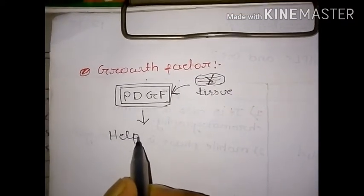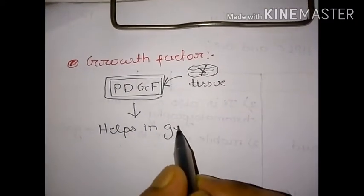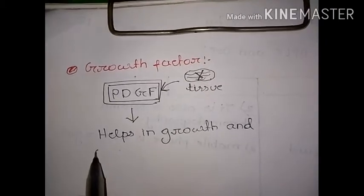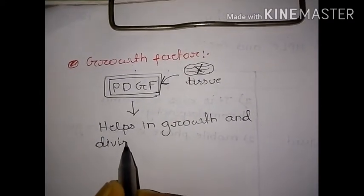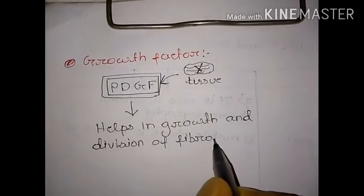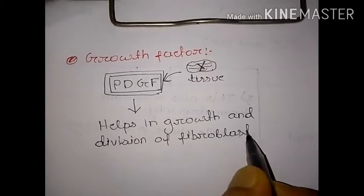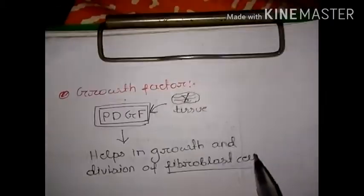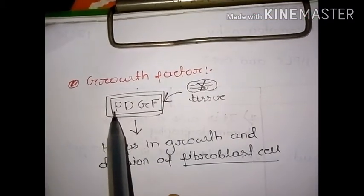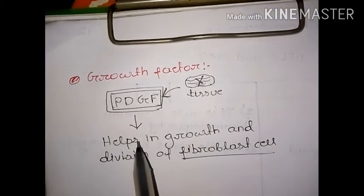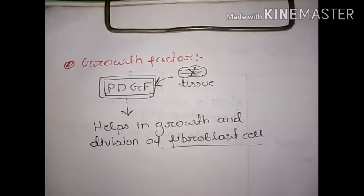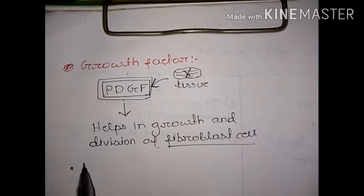PDGF helps in the growth and division of fibroblast cells. When the tissue is damaged it releases platelet derived growth factor, and platelet derived growth factor helps in the growth and division of fibroblast cells.